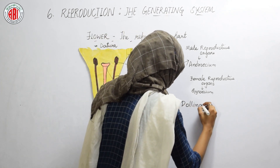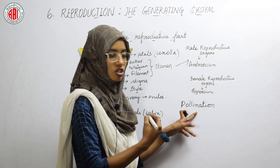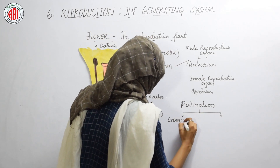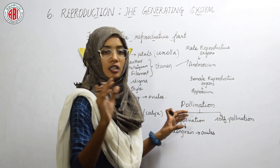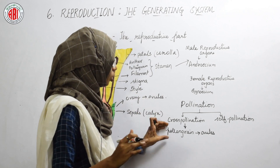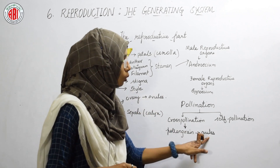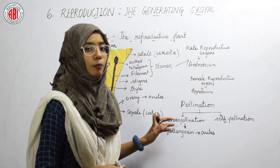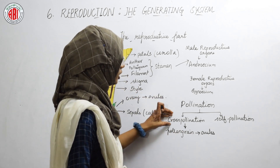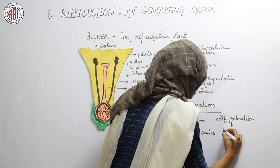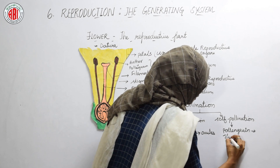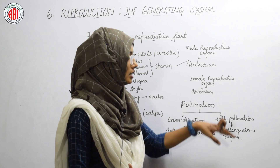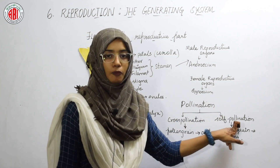Pollination is of two types: cross pollination and self pollination. Cross pollination is when pollen grains fertilize the ovules of another flower of the same plant or of a different plant. Self pollination is when pollen grains are transferred to the stigma of the same flower.